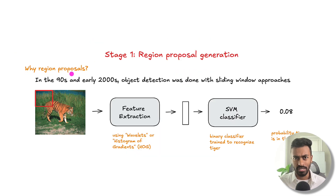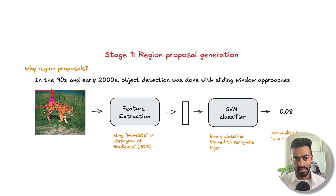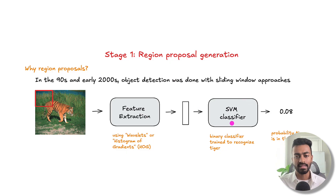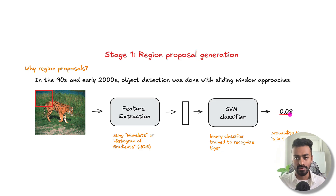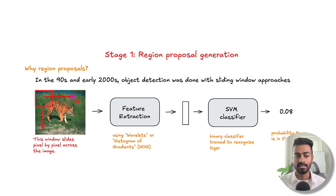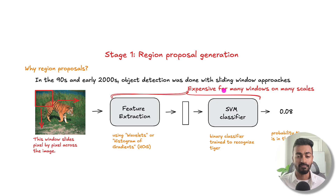Why do we have region proposals? Back in the 90s and early 2000s, object detection used a sliding window approach. We take a small red box, perform feature extraction to get a vector representing that box, and classify it — for example, using an SVM to determine whether it contains a tiger, getting something like 0.08. Then we slide this window pixel by pixel across the entire image. The problem is this can be very expensive.